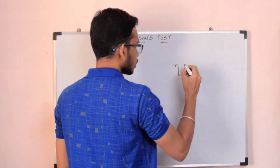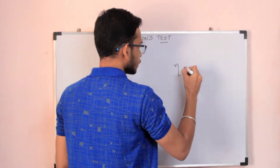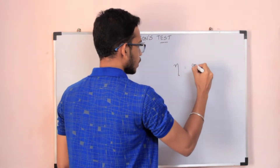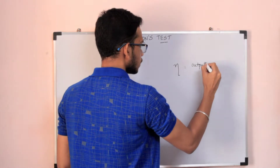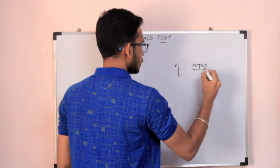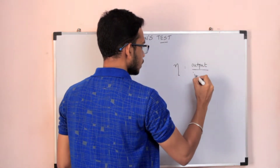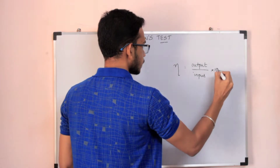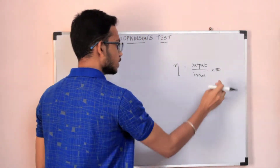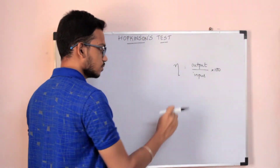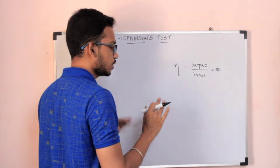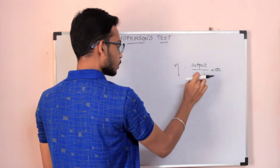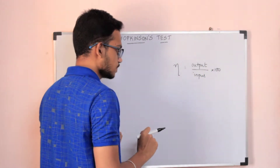The efficiency formula is: output power divided by input power, multiplied by 100. The 100 gives us the percentage. The basic relationship is that output power divided by input power equals efficiency.